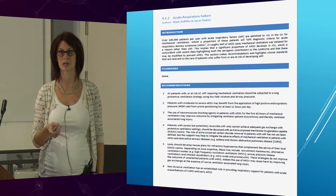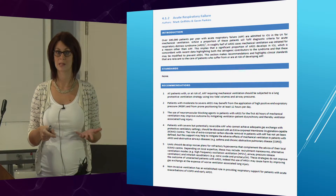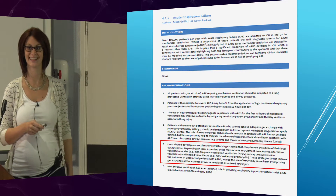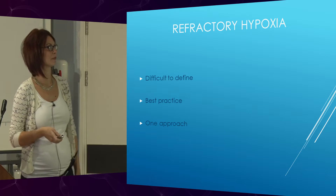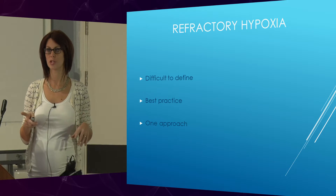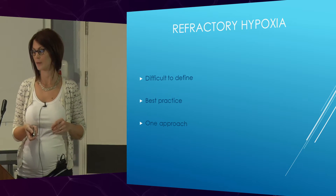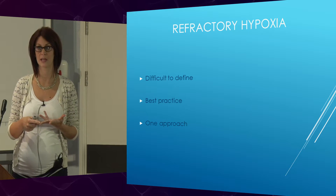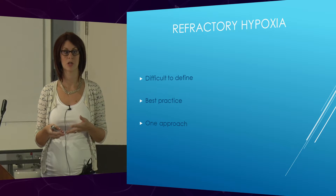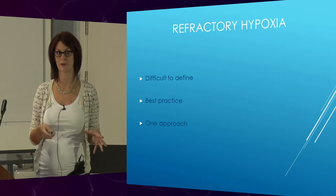When we referred our patients to tertiary centres, we found — particularly in the last few years — that they were saying to us: can you prone your patient and can you put them on APRV? So we wanted to do it safely and have guidelines in place to manage this. Regarding refractory hypoxia, we use the Berlin classification. You've got mild, moderate, and severe ARDS. Mild is less than 300 mmHg, moderate is less than 200, and severe ARDS is less than 100 mmHg — or less than 13 kilopascals. This is the group of patients we want to identify and put a management plan in place.